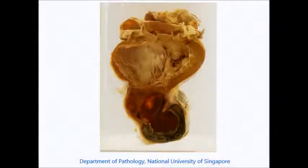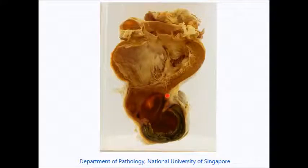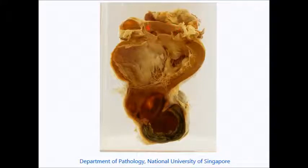This is a picture of the heart. The heart has been opened along the left ventricle, as you can see the left ventricular wall here. Here we're looking at the aortic valve and the ascending aorta.